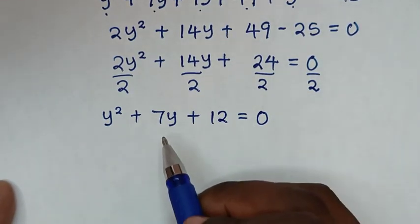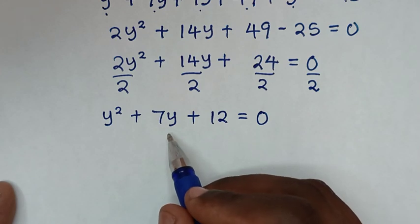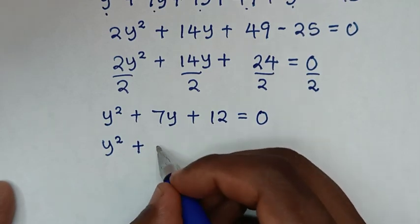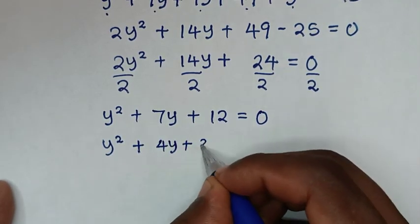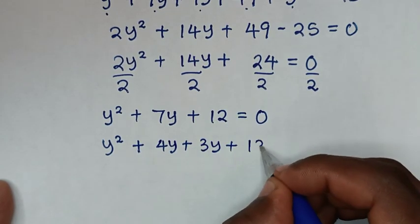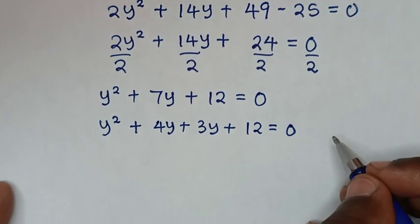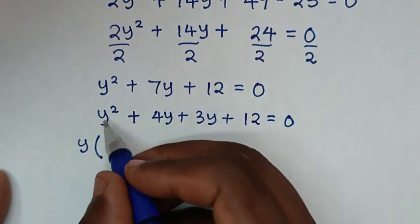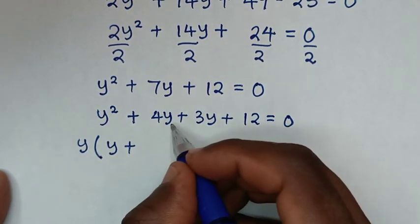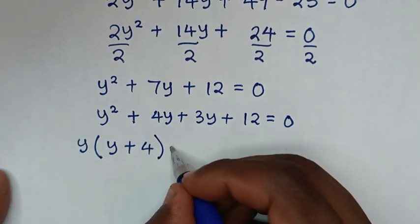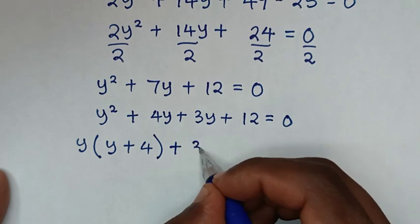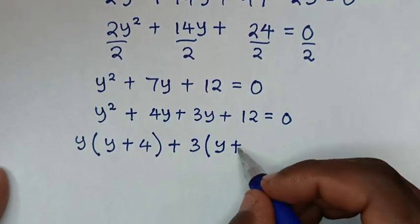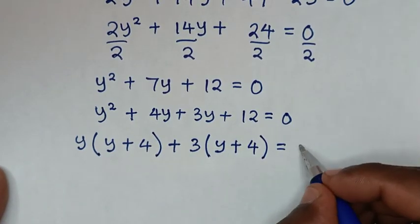This quadratic equation can be solved by grouping and factorization. We split 7y as 4y plus 3y, giving y squared plus 4y plus 3y plus 12 equals 0. Taking y common from the first group: y(y plus 4), and taking 3 common from the second group: 3(y plus 4), equals 0.